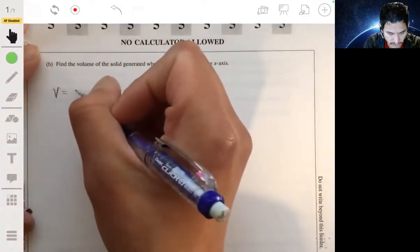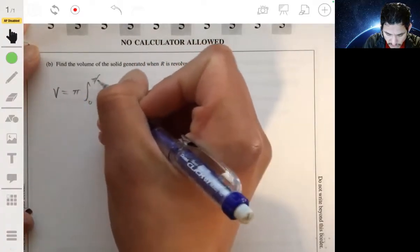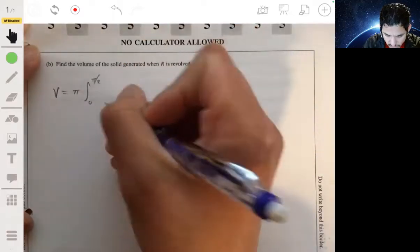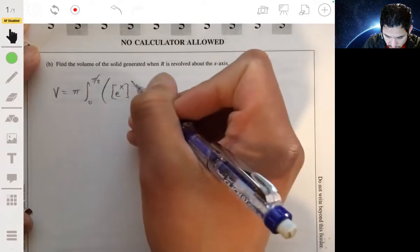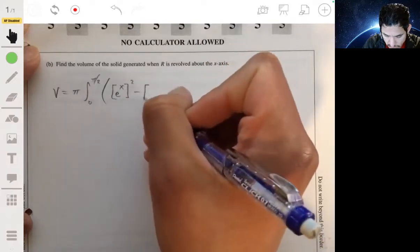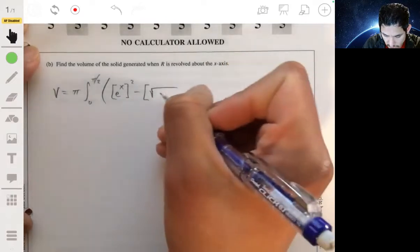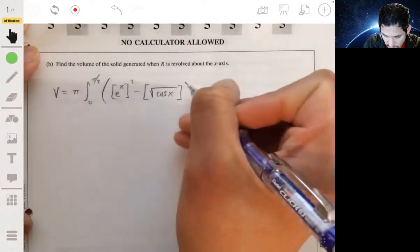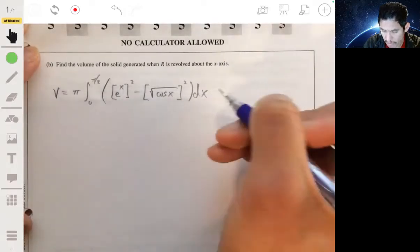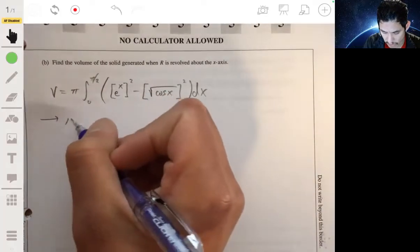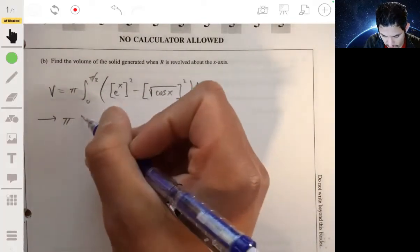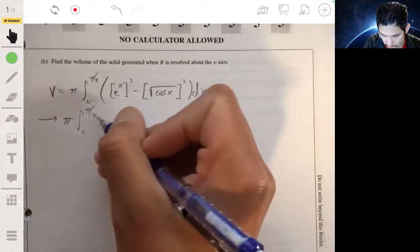V equals π, 0 to π/2, large r(x), which is e^x squared, minus small r(x) squared. Working our way through, we get π times integral from 0 to π/2, e^x squared we can just write as e^(2x).